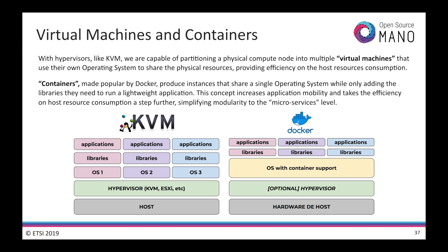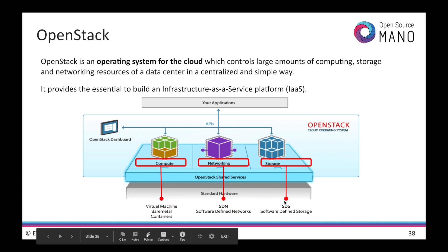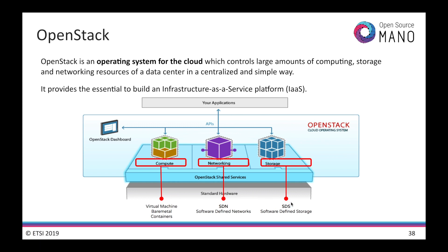Understanding the difference between virtual machines and containers is crucial to gain an understanding of the most recent industry trends. While virtual machines provide a complete isolation between instances, having their own operating systems and libraries, Docker containers — which can run in bare metal or even in virtual machines — take the virtualization efficiency further by sharing a single Linux operating system. This provides agility to start applications, enhanced mobility, improved modularity, and a better use of resources.